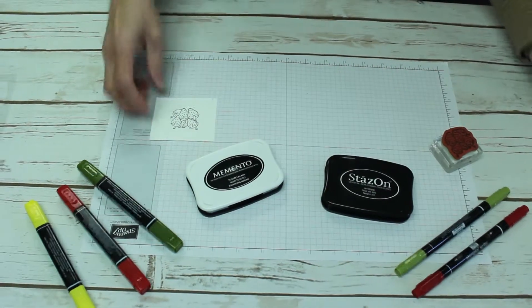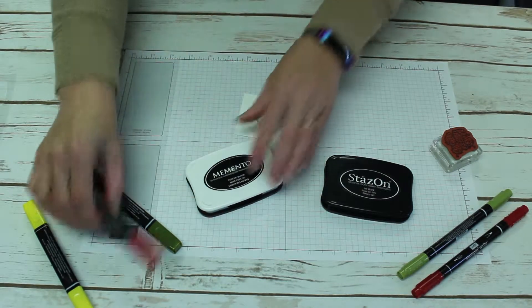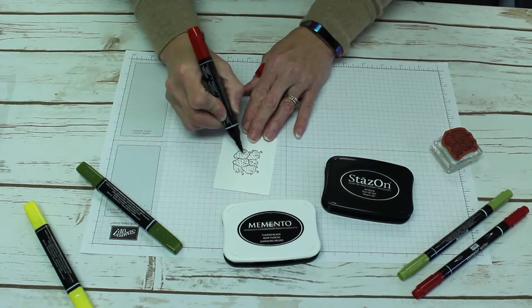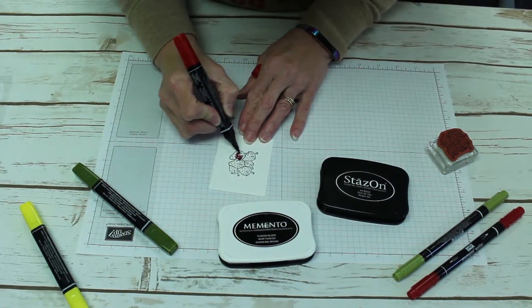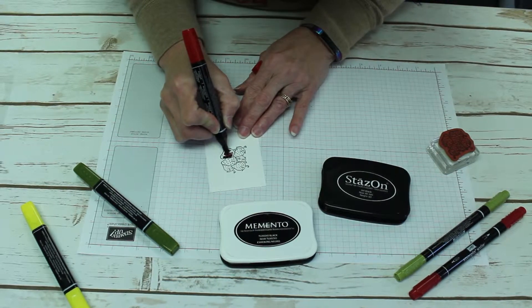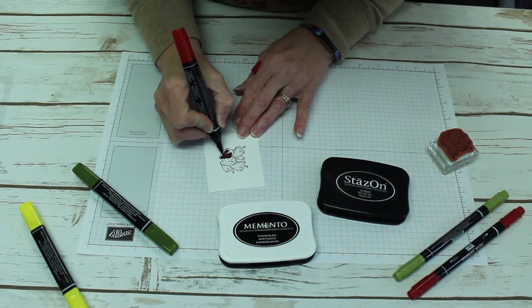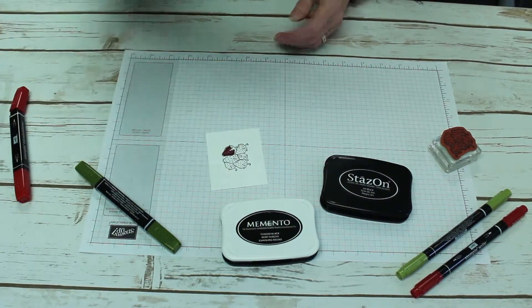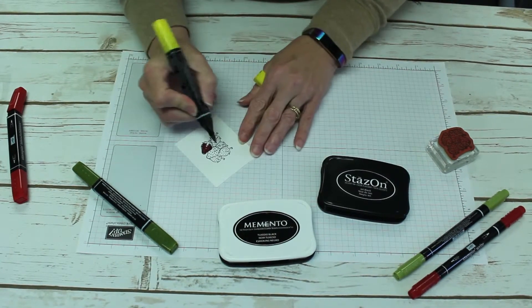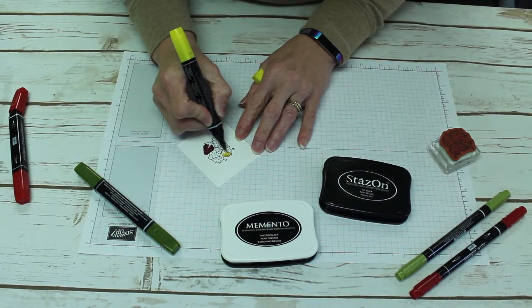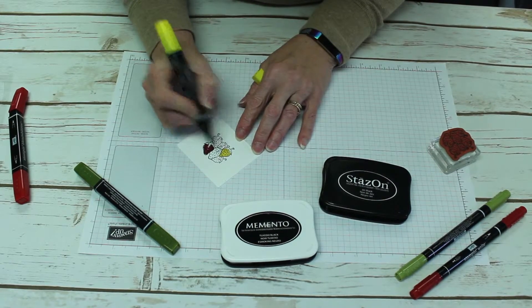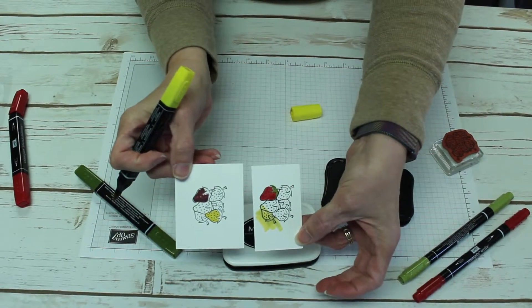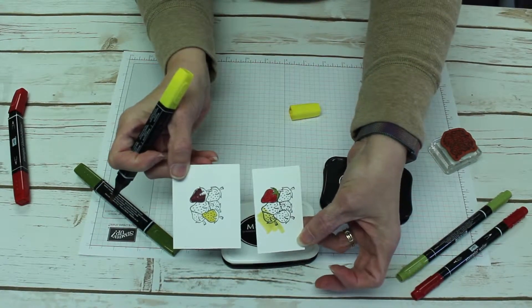Now on the Memento, this is perfect for using alcohol markers. I can easily... should have picked the lighter shade to demonstrate this. Yes, we're going to have a yellow strawberry so you can actually see what happens. See? Coloring right over that strawberry and this time there's no smearing.